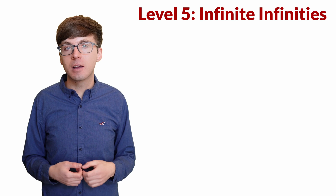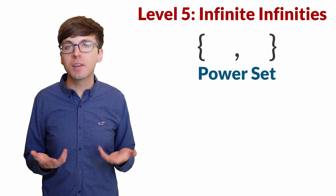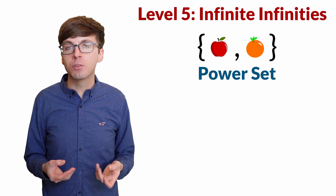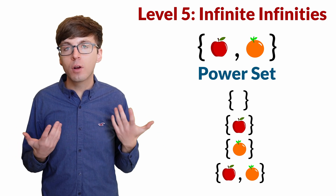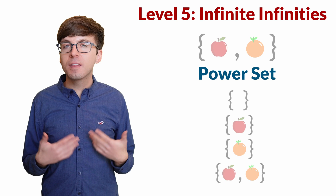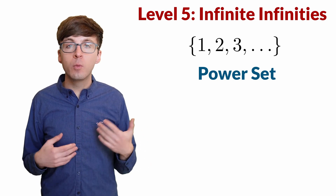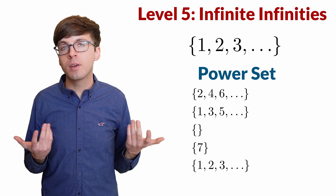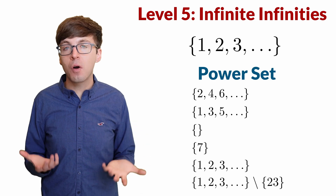For level five, let's show that there are infinitely many cardinalities of infinity. We need one more idea: the power set. Say we have a set containing an apple and an orange — two fruits in a fridge, cardinality two. When we consider taking some fruit, there are four possibilities: no fruit, just the apple, just the orange, or both. These four subsets form the power set. As another example, a subset of the natural numbers is a selection of some of those values — maybe just the evens, or the odds, or just the number 7, or all of them except 23. The power set of the naturals is the set of all such possible subsets.